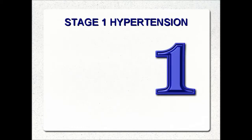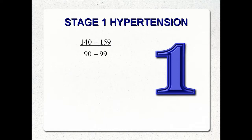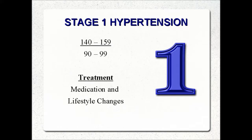Stage one hypertension is the first stage of high blood pressure, sometimes referred to as mild high blood pressure — but don't let that fool you. Anytime your blood pressure is elevated, damage is being done to your body. Stage one hypertension is any reading between 140 to 159 systolic over 90 to 99 diastolic mmHg, and is usually treated with medication and lifestyle changes.